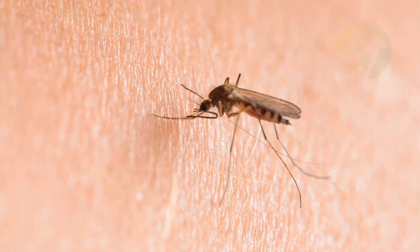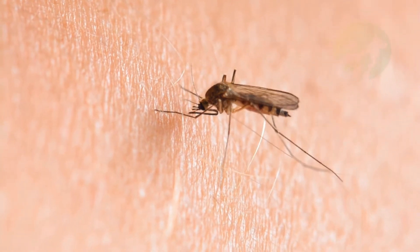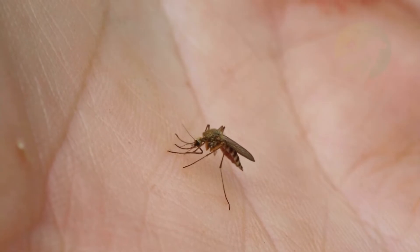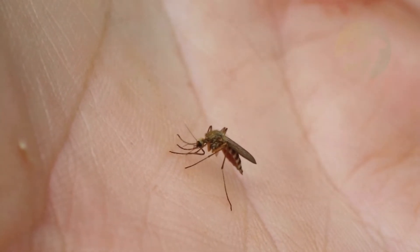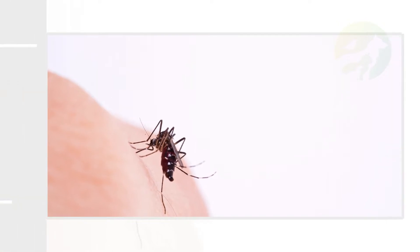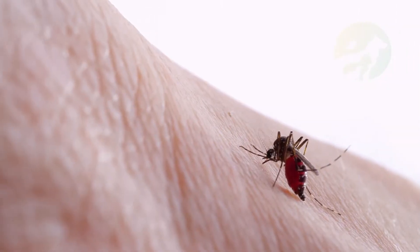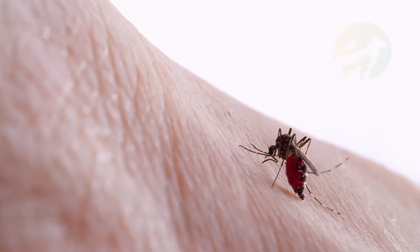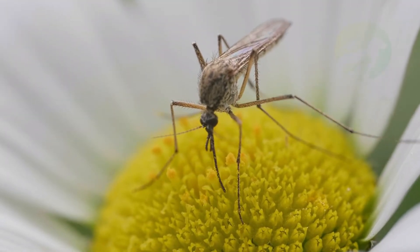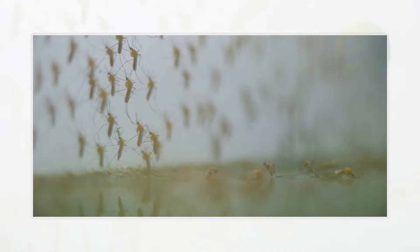In general, mosquitoes exhibit marked sexual dimorphism. Females have hairy antennae and are much more corpulent than males, which have feathery antennae. Females in most mosquito species suck blood (hematophagous) from other animals, giving them the reputation of being the deadliest disease vector known to man, killing millions of people over thousands of years.